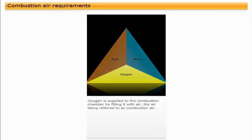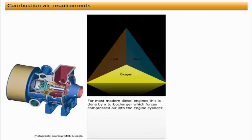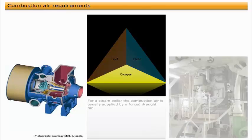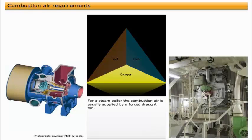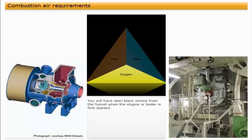To allow combustion of fuel to take place, there must be oxygen present. Oxygen is supplied to the combustion chamber by filling it with air, the air being referred to as combustion air. For most modern diesel engines, this is done by a turbocharger, which forces compressed air into the engine cylinder. For a steam boiler, the combustion air is usually supplied by a forced draft fan. The amount of air supplied, along with other requirements, will dictate how good the combustion will be.